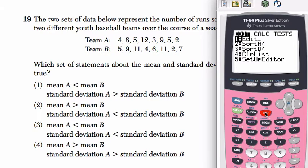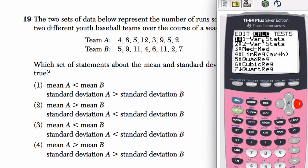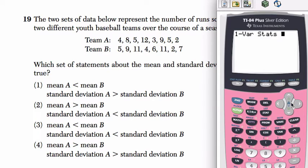So now we're going to analyze that data really quickly. Press stat, go back to calc, and the one variable statistics will tell us the mean and standard deviation at the same time. So first we do it for list 1. Hit enter.